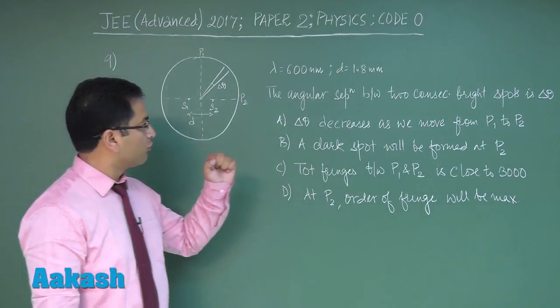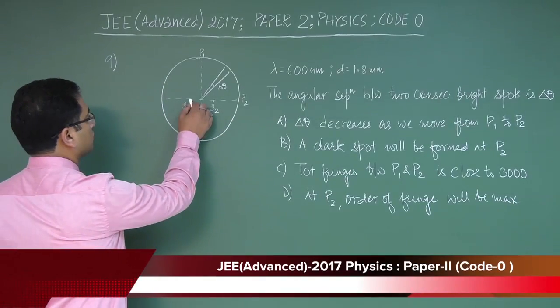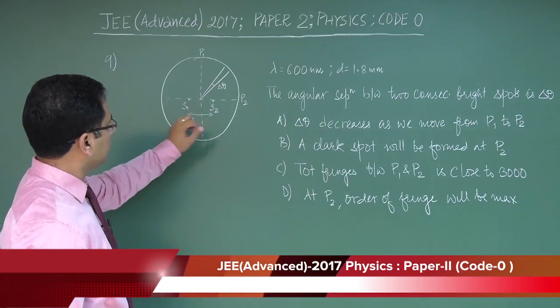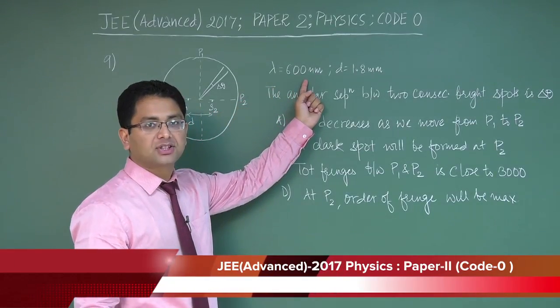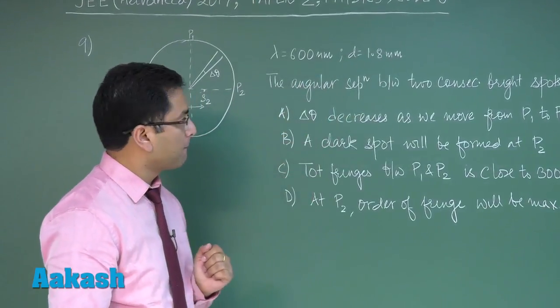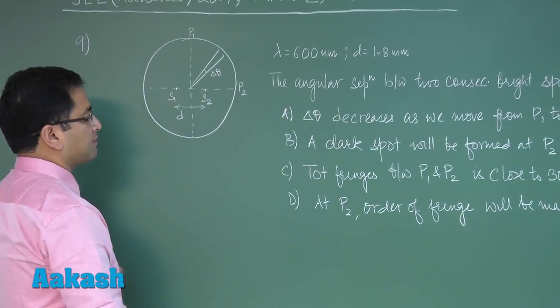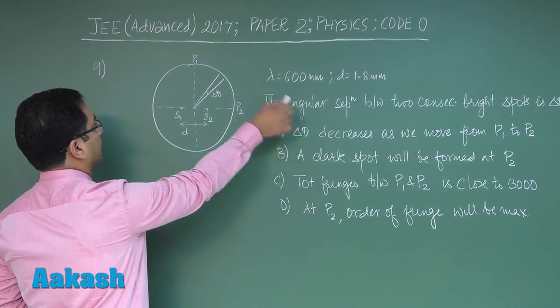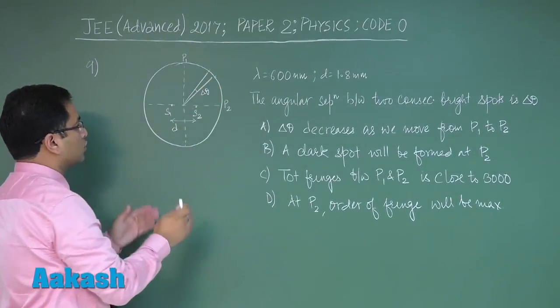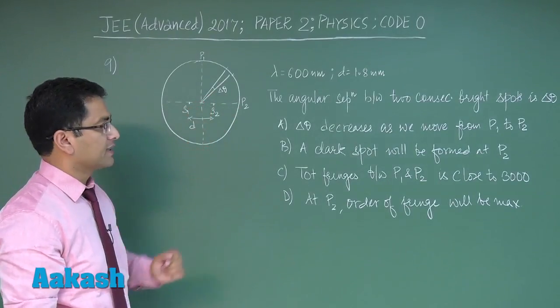Question number 9 is from wave optics, it's an interference question. There are two monochromatic sources S1 and S2, each source has a wavelength of this much and the sources are separated by this much distance. The angular separation between two consecutive bright spots is Delta Theta. The angular separation between two bright spots is called Delta Theta.